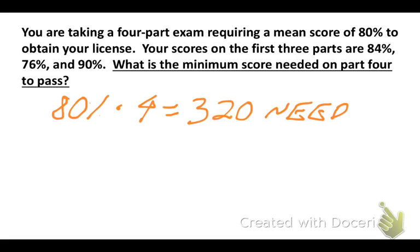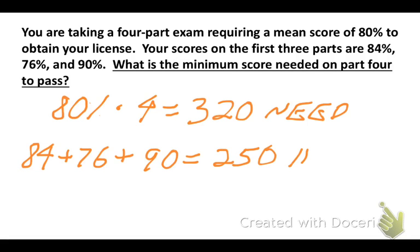Now, I have to think about what I have right now. So if I add the three scores I have right now, 84, 76, and 90, that adds up to 250. This is what I have. So if I subtract 250 from 320, I get a score of 70% as well. This is an alternative way to going through this problem.